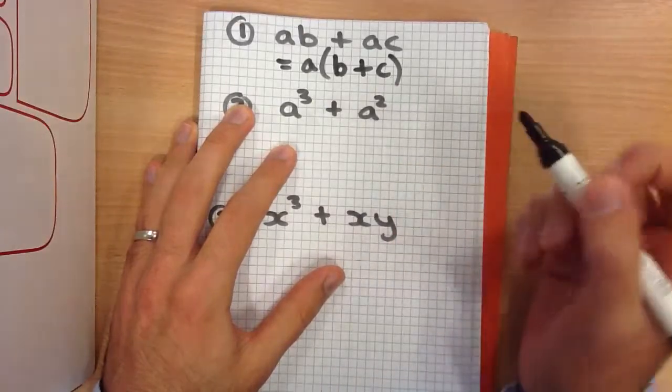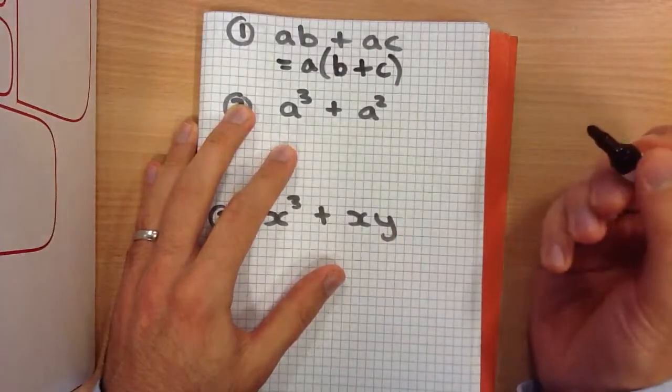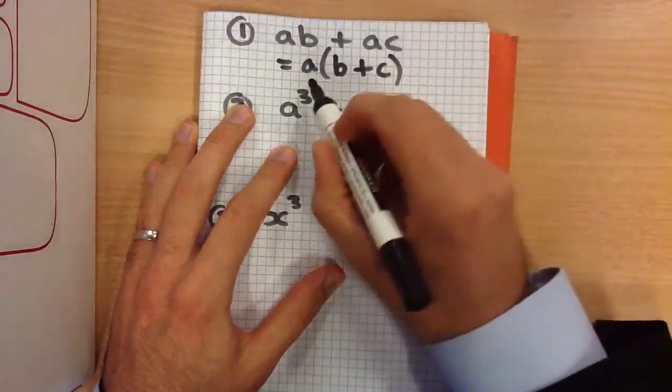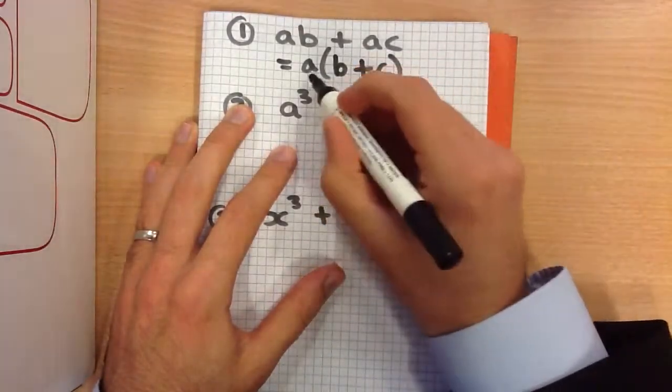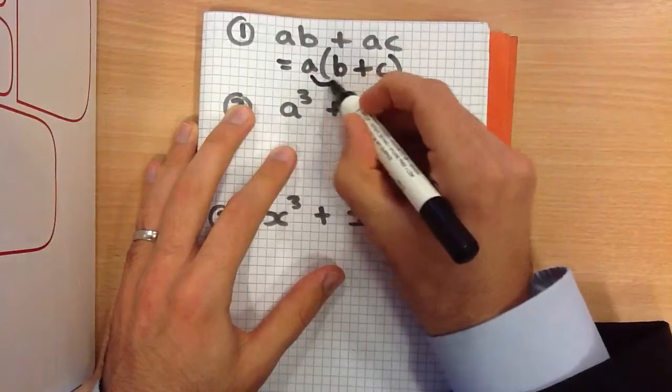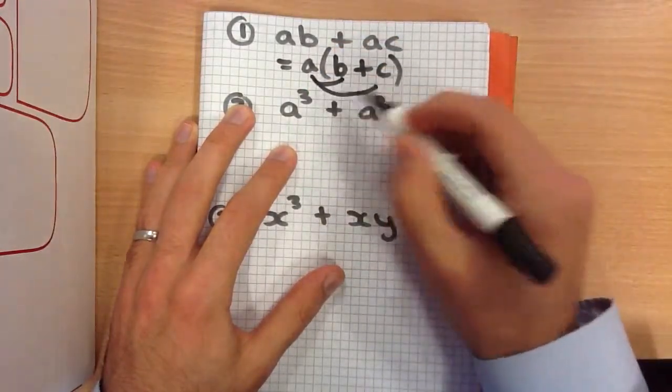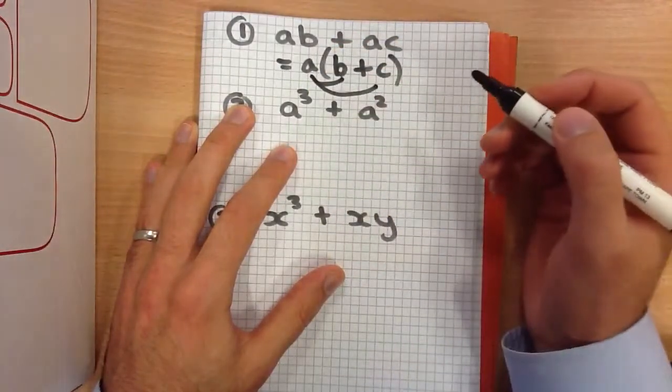You can check that in the exam if you like, to make sure you're right, by expanding the bracket again. So A times B is AB and A times C is AC.